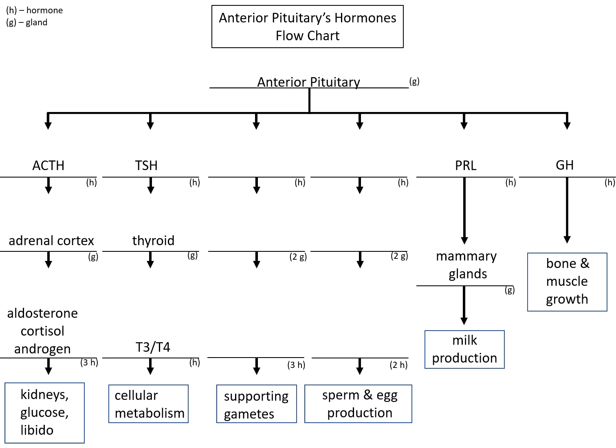Now I've got sperm and egg production. The hormone the anterior pituitary releases specific to sperm and egg production is follicle stimulating hormone. The target of follicle stimulating hormone is going to be the gonads. If you're female, it's the ovaries; if you're male, it's the testes. In the case of the female, FSH triggers the ovaries to make estrogen. In the case of the male, FSH triggers the testes to make testosterone. So there are two glands and two hormones, specific to male and female.